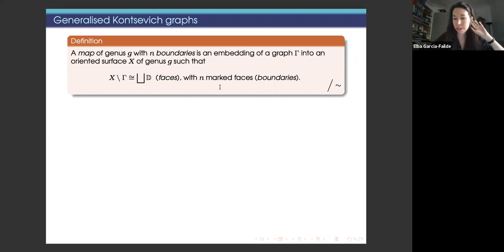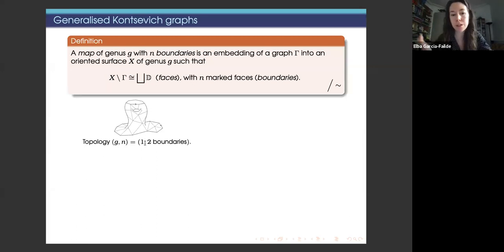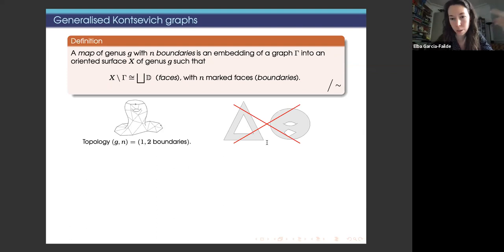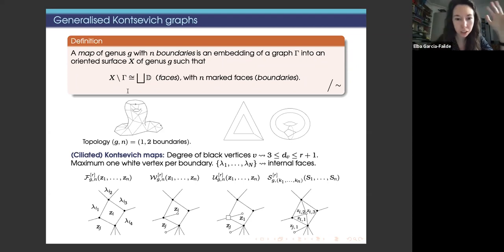Here is an easy example: a map on a surface of genus 1 with two marked faces — we say this map has topology (1,2). We can see two graphs, one embedded on the sphere and another on the torus. The gray faces don't have the topology of a disk, so they are not really maps, but we can add some edges and then they are maps.